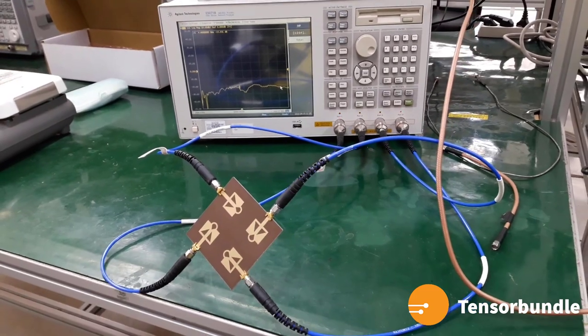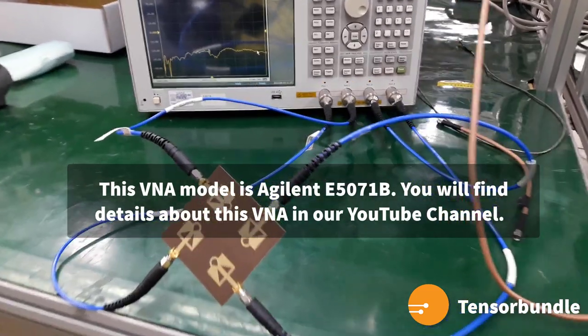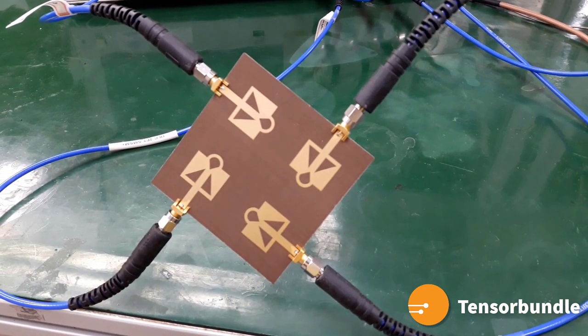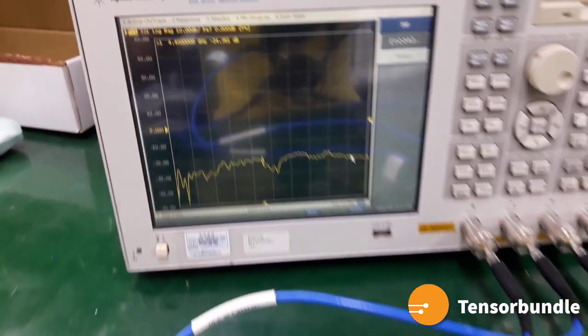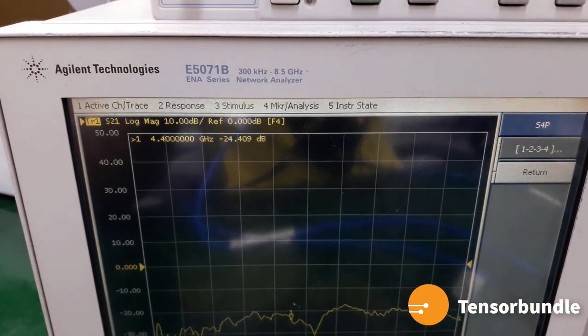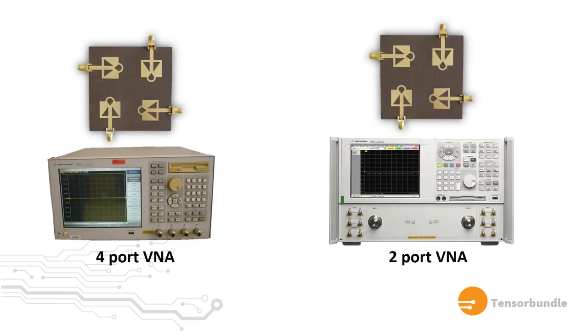But if your VNA has four ports, that is also fine. In that case, you can directly connect all four ports of the MIMO antenna to the ports of the VNA and get the mutual coupling parameters directly at the same time. This is also a valid measurement methodology. So depending on the number of ports available in your lab's VNA, you can use any of the methods that we demonstrated in this video.